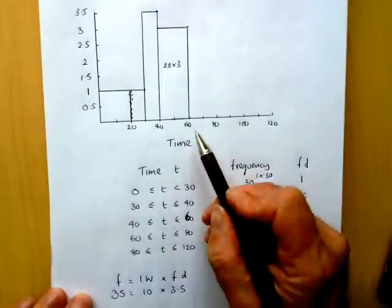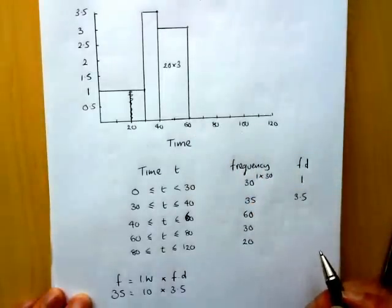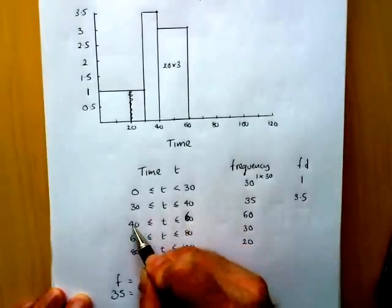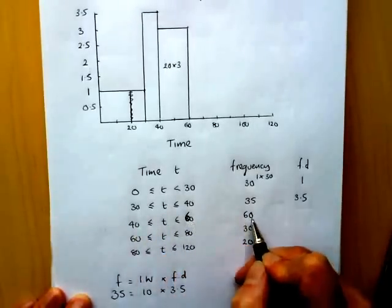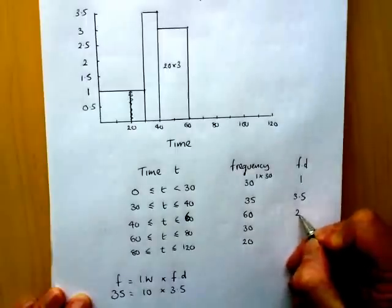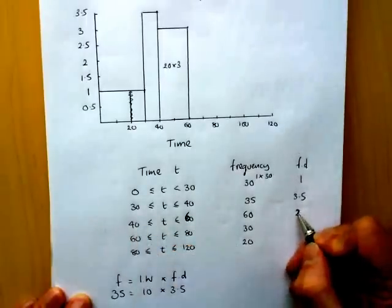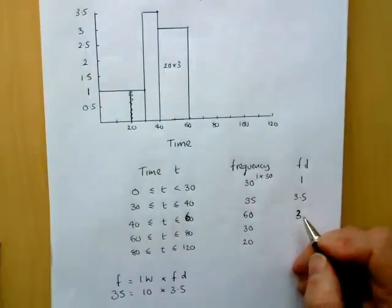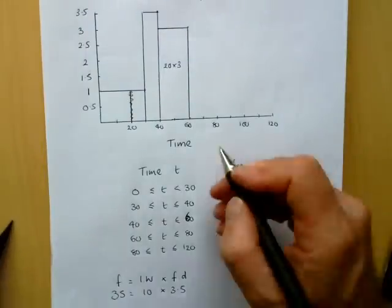Now we need the other frequency densities to draw the rest of the histogram. So it would be 60 divided by the interval width of 20. 60 divided by 20 is 3. So I can now go to my 40. Oh, we've done that one.